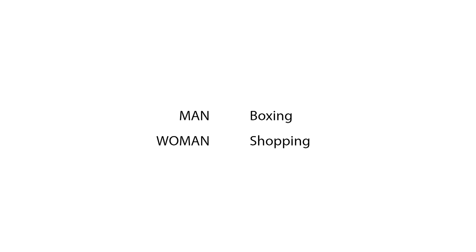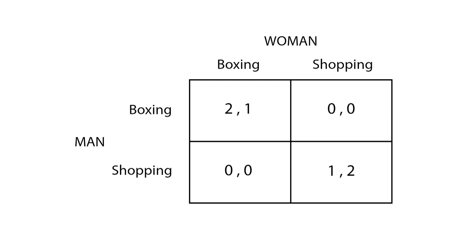In the Battle of the Sexes, a couple argues over what to do during the weekend. The man prefers to go watch a boxing match whereas the woman wants to go shopping. In this game we have two players — the man and the woman — each of whom has to decide which of the two strategies to choose: either go to the boxing match or go shopping. They can agree on what to do or go their separate ways and spend the weekend apart. This is considered a simultaneous game, and therefore we use the strategic form to analyze it using a matrix.